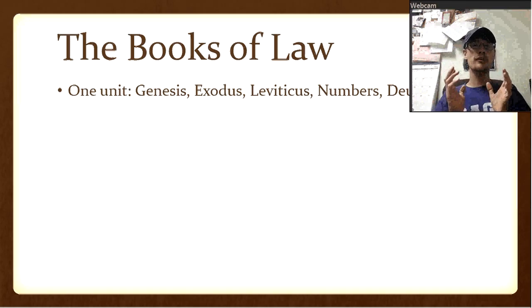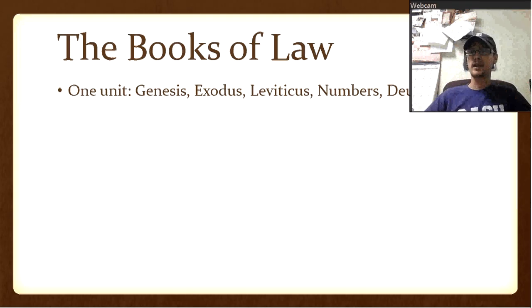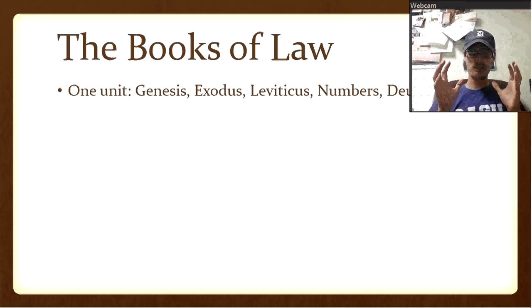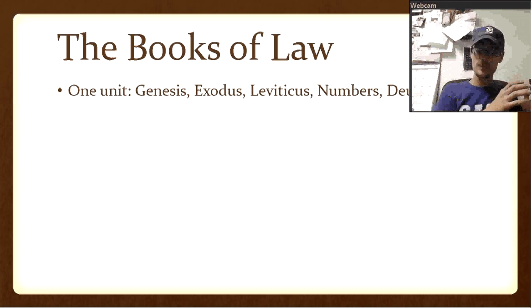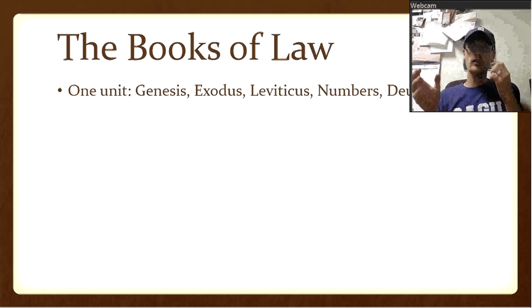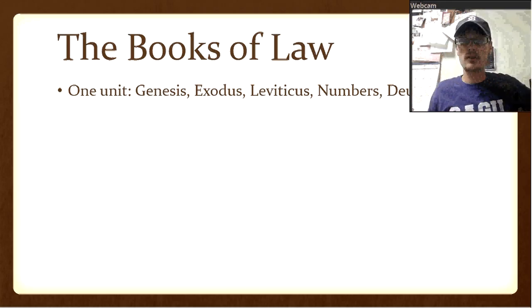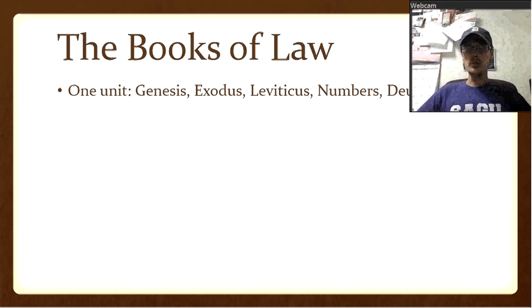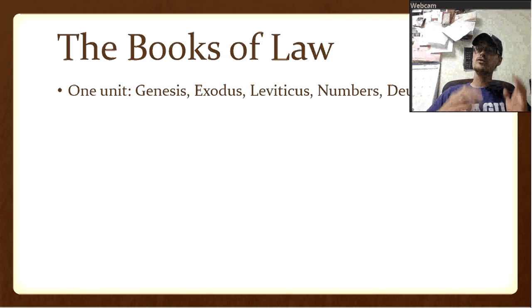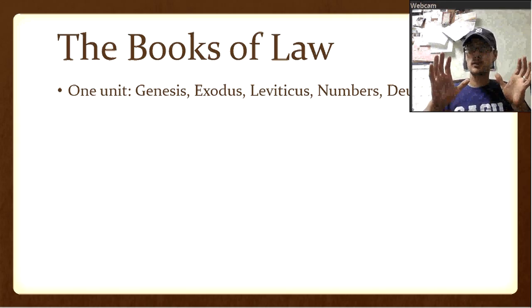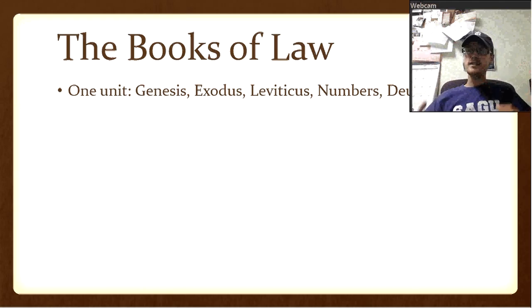Think of it as one book with five different parts. They are all very much connected, not just in the way they progress historically, but in the way they're written. Genesis will show things in its history portions that Exodus, Leviticus, or whatever will then address in the law. See Exodus as part two of the same book, Leviticus as part three, Numbers as part four, and Deuteronomy as part five — one unit together, because that's how they were written.